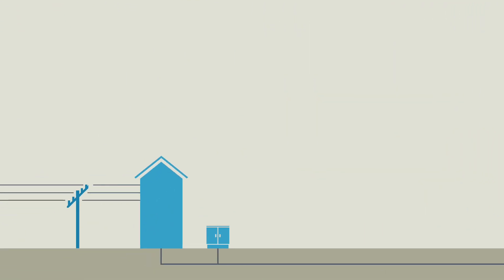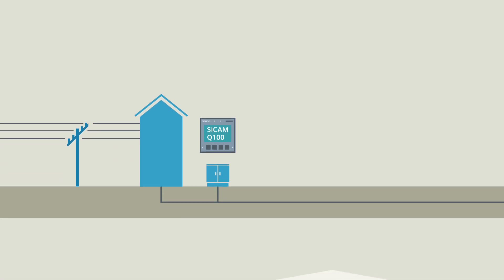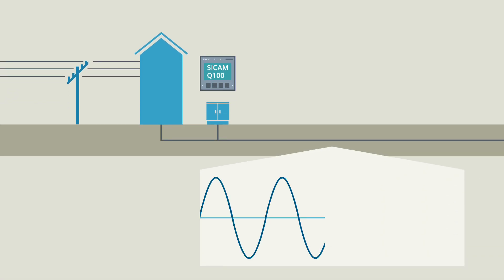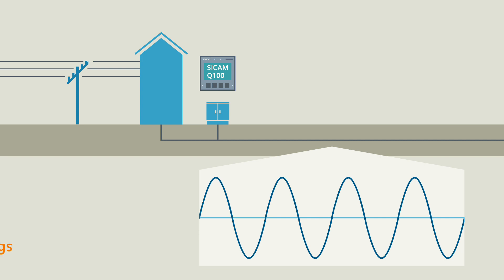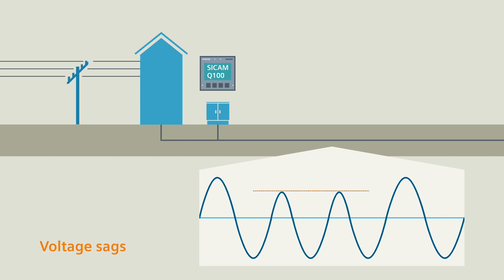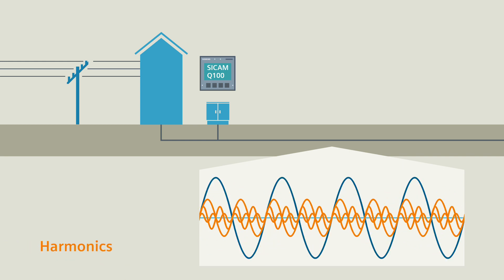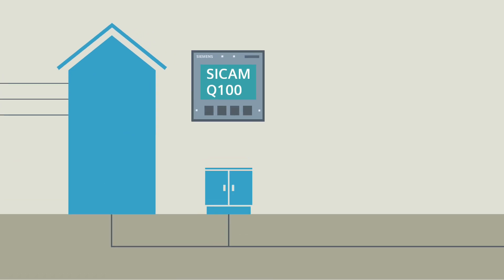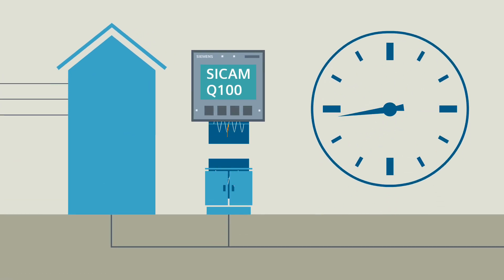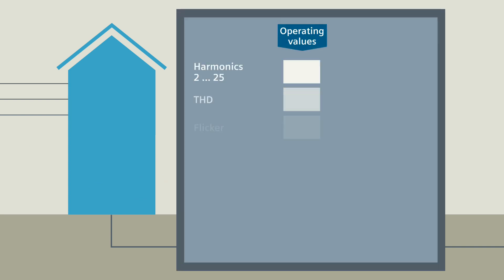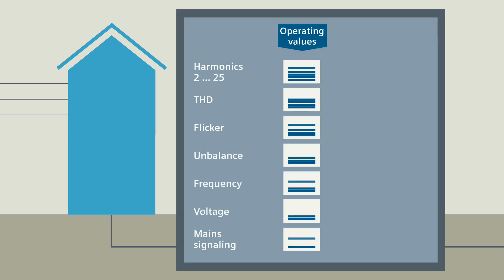As an example, let's take a typical secondary substation that is monitored by a CCAM-Q100. In the line, voltage-related interferences can occur all the time — for example, voltage sags, transients, harmonics, and much more. The CCAM-Q100 constantly records these interferences and saves the individual operating values separately for each measured quantity.